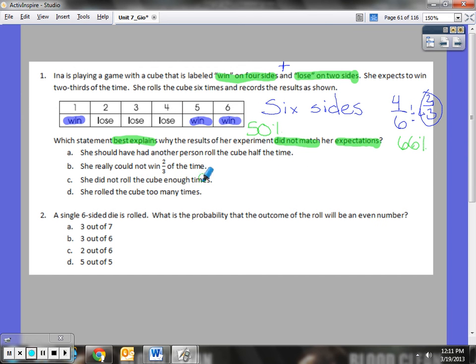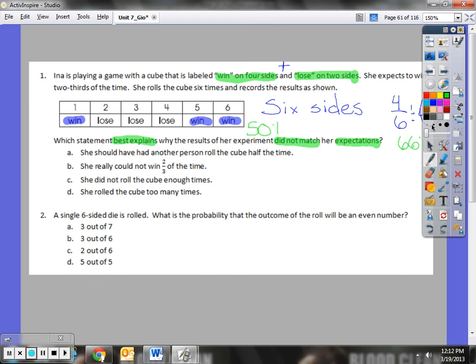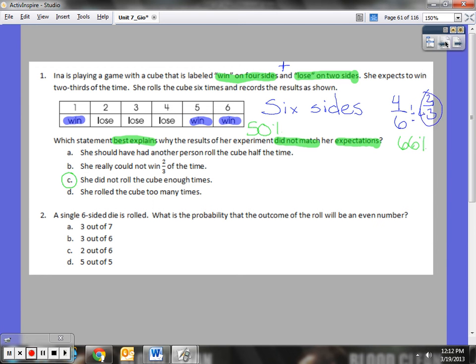She did not roll the cube enough times, or she rolled the cube too many times? Well, if she rolled fewer times, if she just rolled three times, she actually lost 66% of the time, so that still wouldn't match it. If she rolled four times, then she's losing 75% of the time. So, it probably has nothing to do with not rolling, and that has nothing to do with rolling too many times. It'd have to be she did not roll it enough times, because we want that larger sample size. We need a larger sample size to really get accurate results, so that her theoretical would match her experimental.